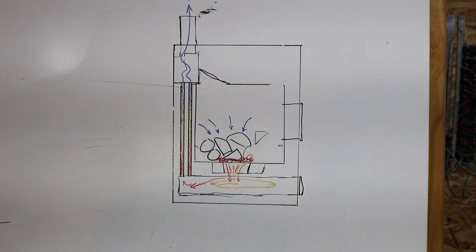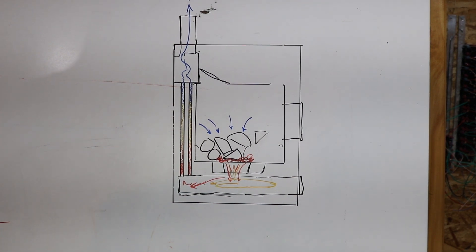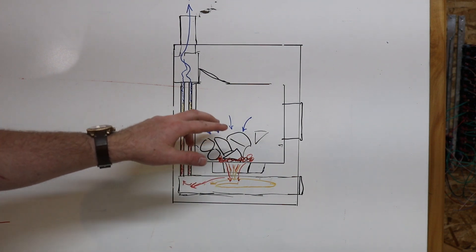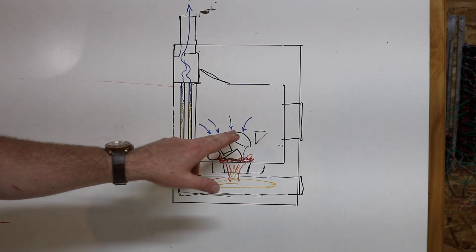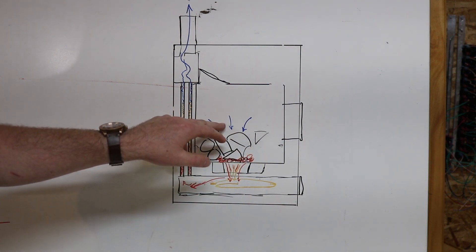So here I have a drawing of a side cutaway of a G-series furnace, just as an example. This is the firebox. In here we have our wood pile, our fuel. We have fresh air coming in the sidewalls of the firebox.